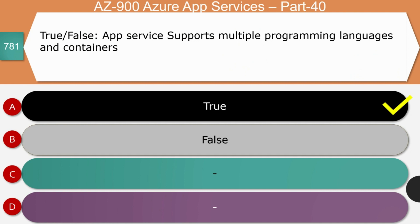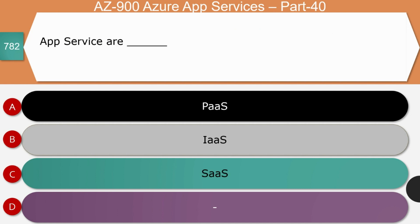First question — true or false: App Service supports multiple programming languages and containers. The right answer is true. It supports multiple programming languages and frameworks including ASP.NET, ASP.NET Core, Java, Ruby, Node.js, Python, and many more. It also supports multiple varieties of containers like Windows, Linux, and others.